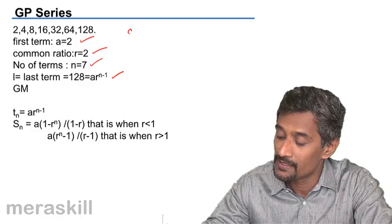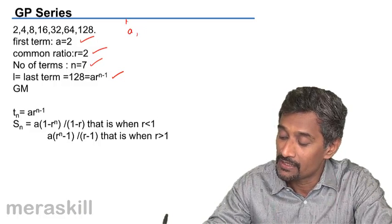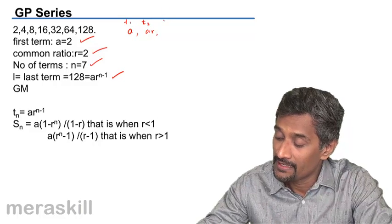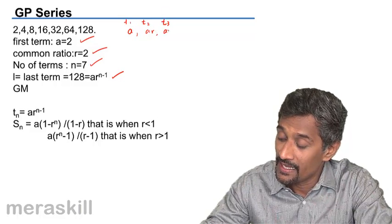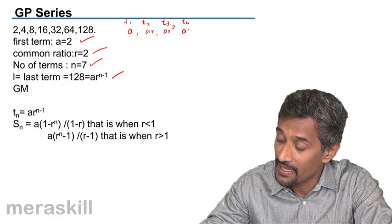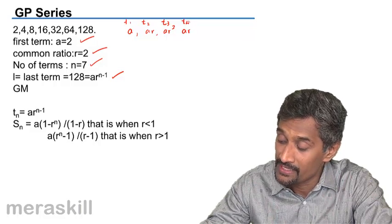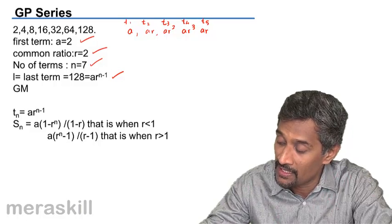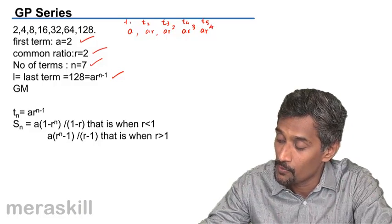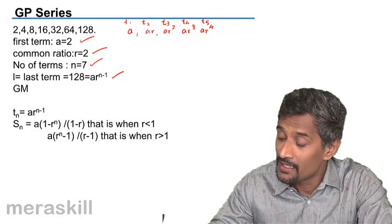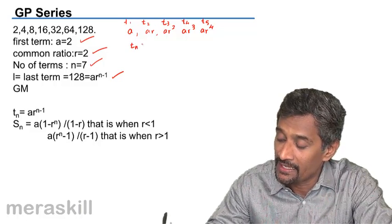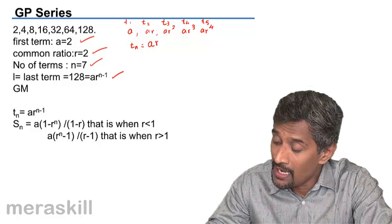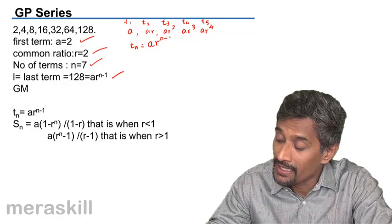Here the first term T1 is A, T2 is AR, T3 is AR squared, T4 is AR raised to 3, and T5 is AR raised to 4. So each term TN is always given by A into R raised to N minus 1.